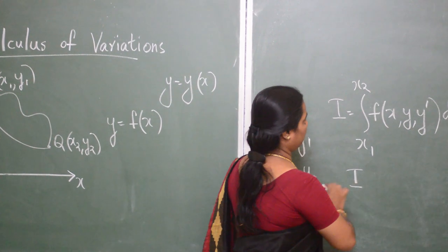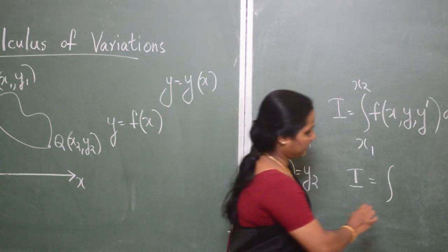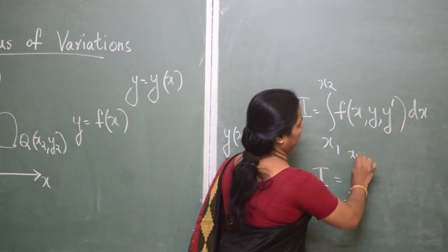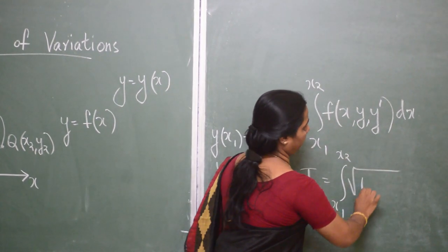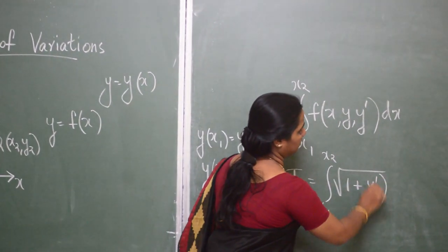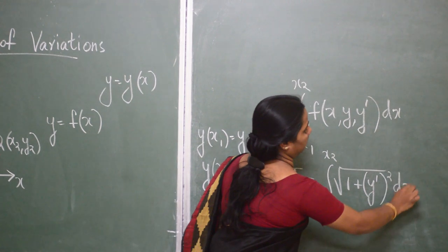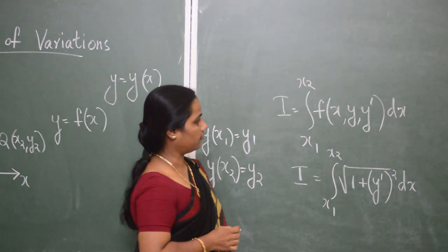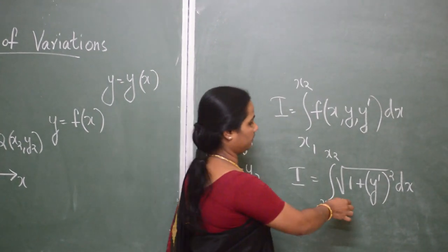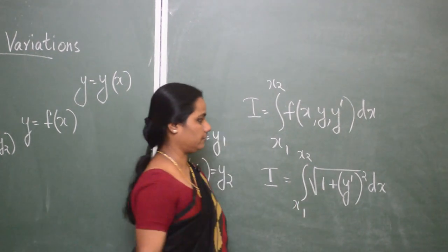we are minimizing i equal to integral x1 to x2 root of 1 plus y dash square dx. Therefore, here, f of x, y, y dash is given by root of 1 plus y dash square.